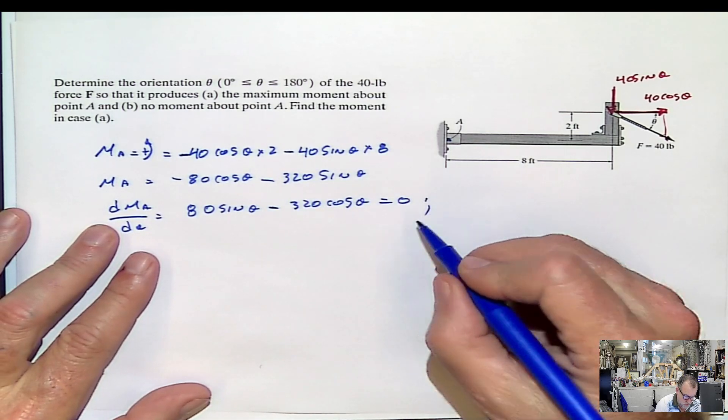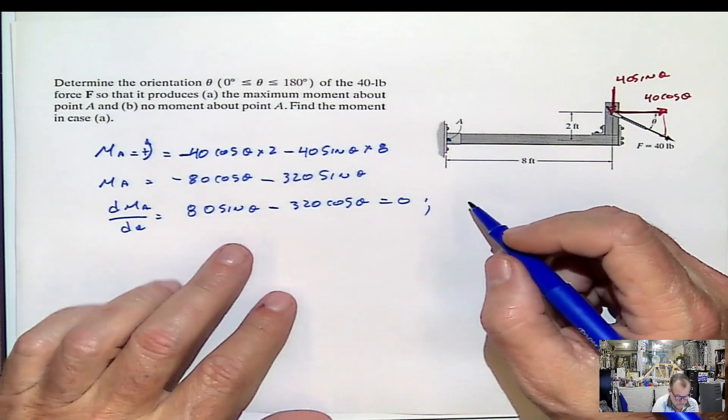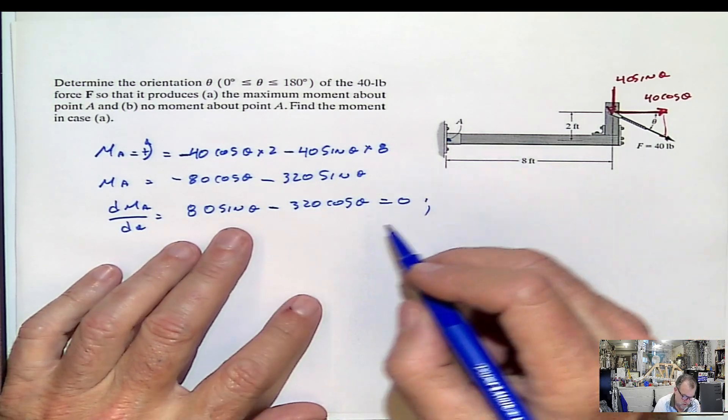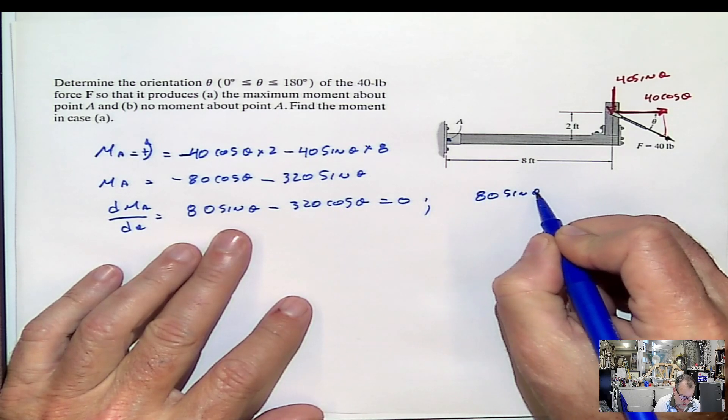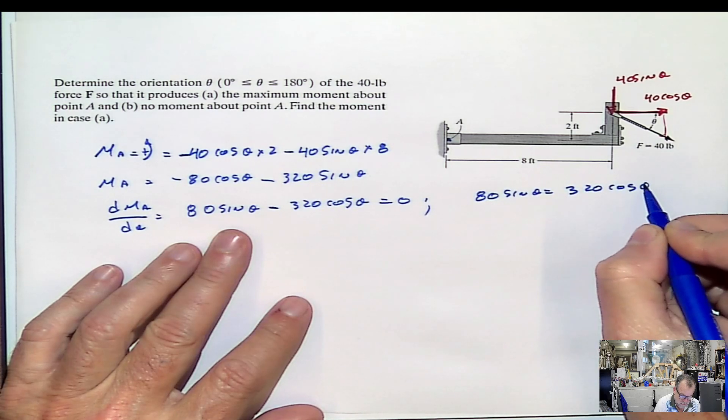Solve it again. I'm going to do it by parts, because some students are telling me, why don't you do that by parts? So I'm going to pass this to the other side. 80 sine of the angle equals 320 cosine of the angle.